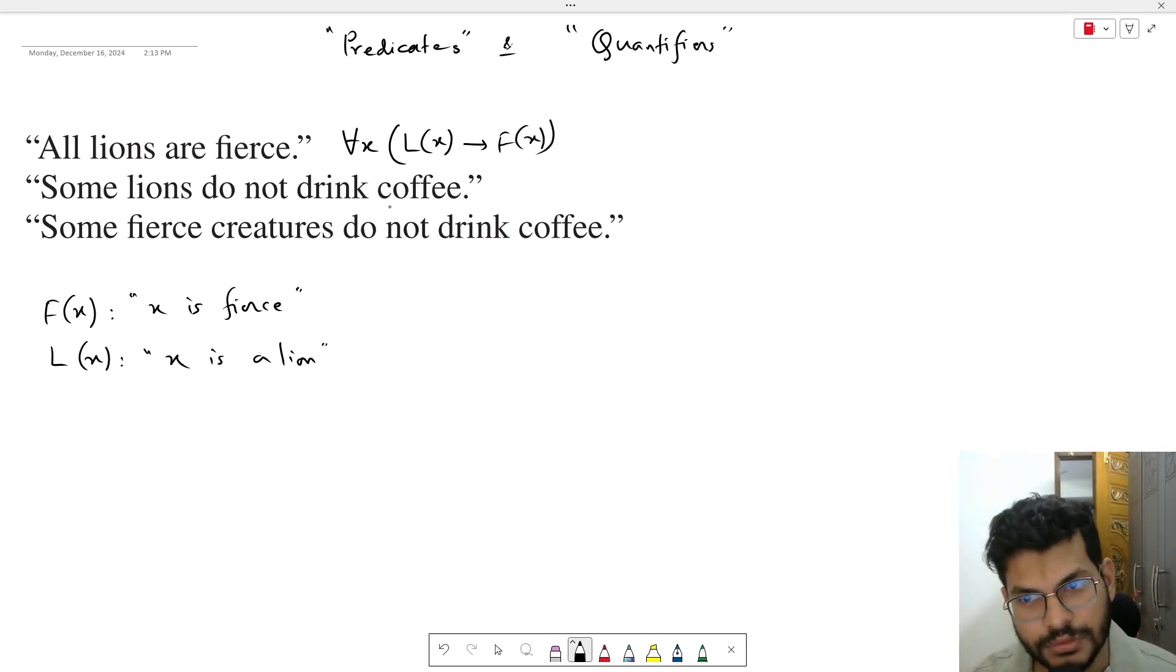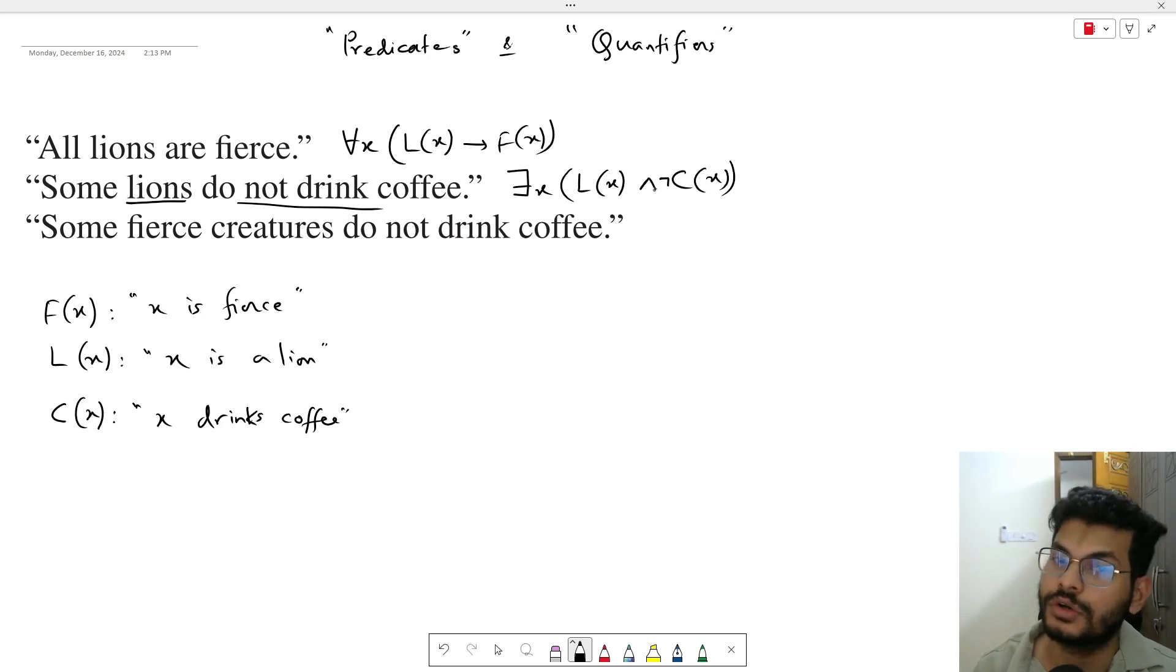Some lions do not drink coffee. This is an existential quantifier - there exists some X such that X is a lion and X does not drink coffee. X does not drink coffee, not, okay.